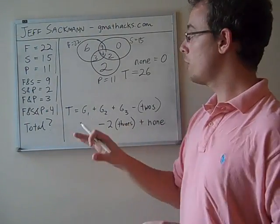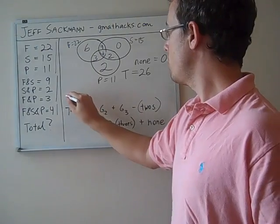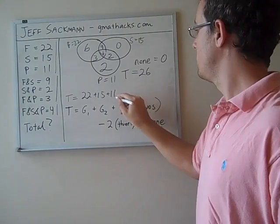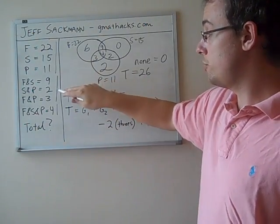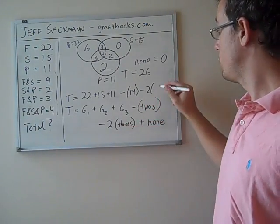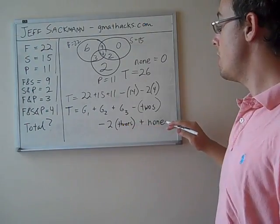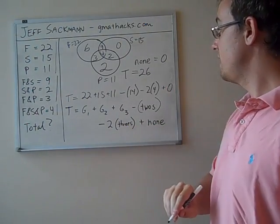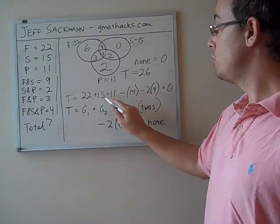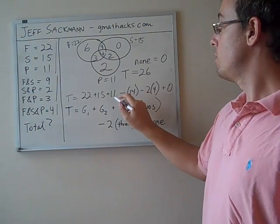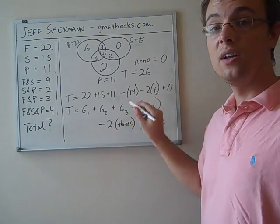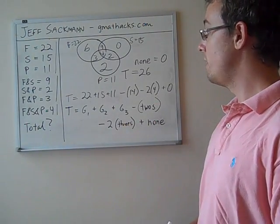So quickly, let's work through that given these parameters. So the total is group one plus group two plus group three, 22 plus 15 plus 11, minus the twos, that's nine plus two plus three, is 14, minus 14, minus two times the threes, which is four. There's no nones, so we can add in the zero right there. And theoretically, that should work out to 26. Let's check it out. 22 plus 15 is 37, plus 11 is 48. Subtract the eight right here, that gets us down to 40. Subtract the 14, that gets us to 26. And there we have it.